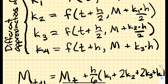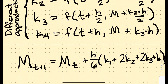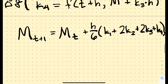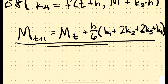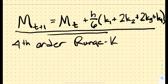The two middle slopes at the half-time step ahead get a greater weight of 2 each, meaning they get more influence in the weighted average solution. This is what's known as a fourth-order Runge-Kutta, often abbreviated RK4.